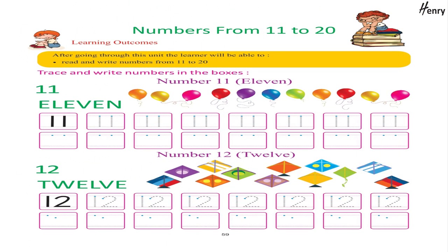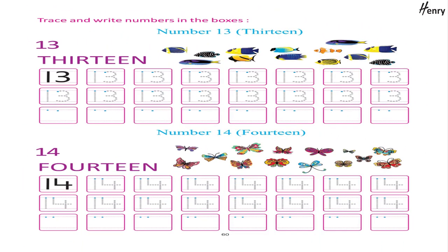Numbers from 11 to 20 — Learning Outcomes: After going through this unit, the learner will be able to read and write numbers from 11 to 20. Trace and write numbers in the boxes: Number 11, Number 12, Number 13, Number 14.